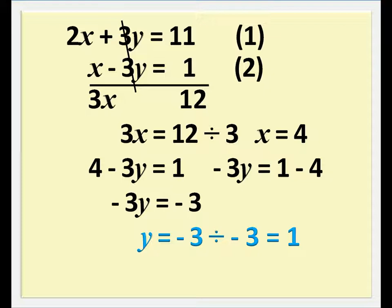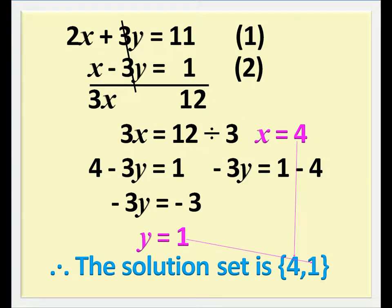To solve for y, the negative 3 multiplying y at the left hand side must move to divide the negative 3 at the right hand side, giving us 1. Therefore, the solution set is the set of 4 and 1.